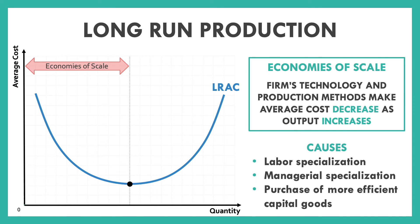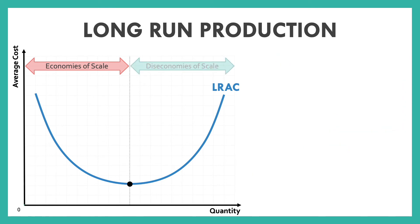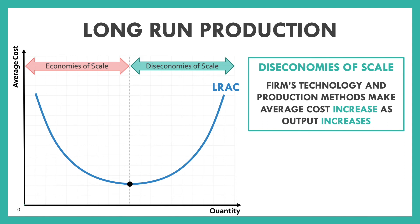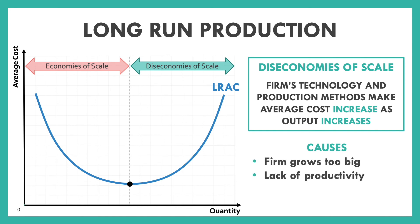But what happens whenever we start to see the average cost per product start to go back up? This is known as diseconomies of scale. Why would a company want that? Well, they don't. Diseconomies of scale is where a firm's technology and production methods cause average costs to increase as output increases. This is what happens when companies grow too big — they get to a point where there becomes a lack of productivity. Lazy workers can slip through the cracks, and there's a breakdown within lines of communication and management.